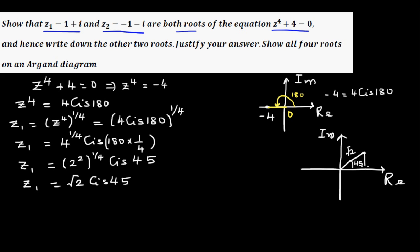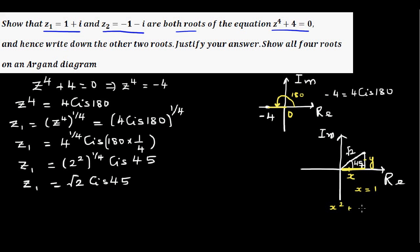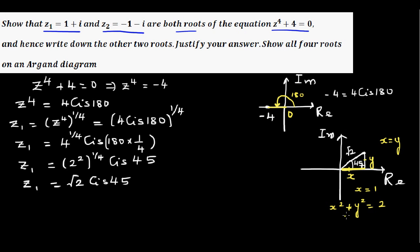Using basic trigonometry on this 45° right-angle triangle with hypotenuse √2: if the two sides are x and y, we can see x = y because it's an isosceles right-angle triangle. By Pythagoras: x² + y² = 2, so 2x² = 2, which gives x = y = 1.